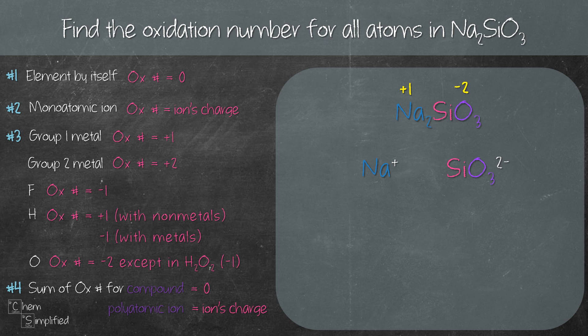We'll use rule number 4 for polyatomic ion. So we set X to represent the oxidation number for Si and now we have X plus 3 times negative 2 equals negative 2.